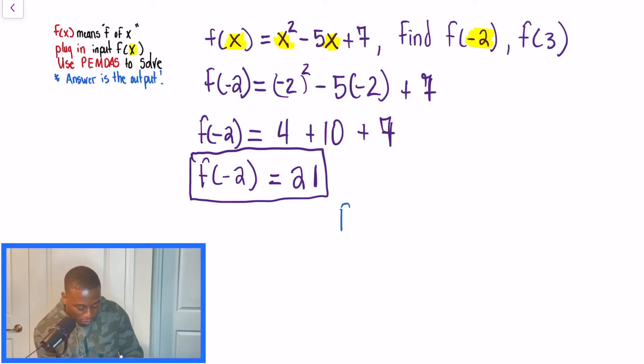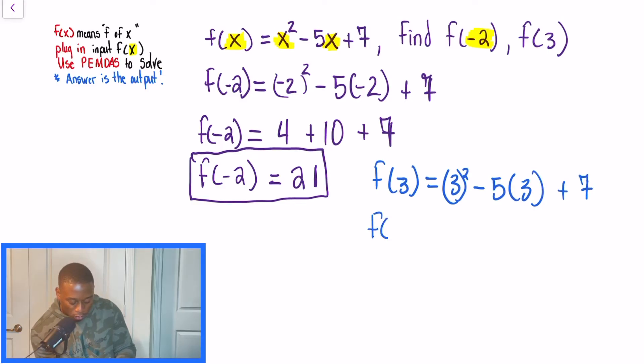So we have f of negative 3. And it's the same process. We're going to substitute 3 everywhere that we see x and use order of operations to simplify. So when x is 3, what will our answer be? We went through, we evaluated, 3 squared is 9, 5 times 3 is 15. So we know f of 3 is equal to negative 6 plus 7. So f of 3 is equal to 1.